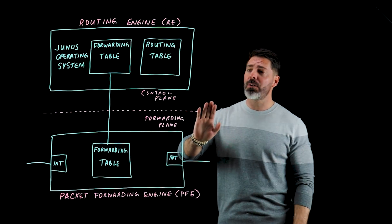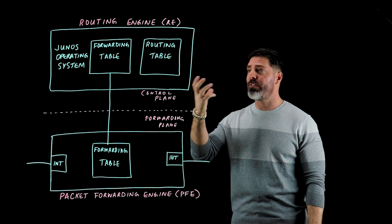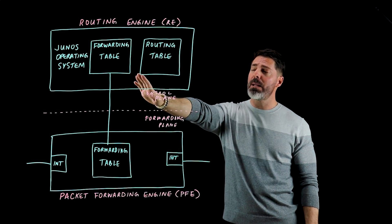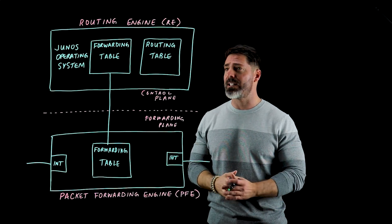We talked about the control plane being the brains of the operation where it maintains the routing tables and forwarding tables. The forwarding table we see on top here is really what's known as the master forwarding table.